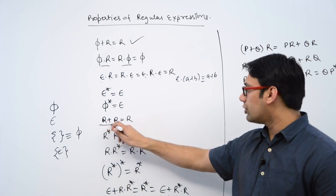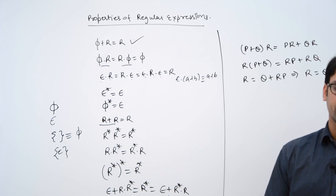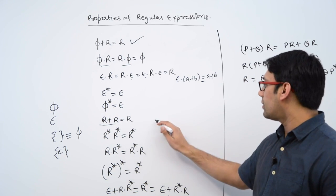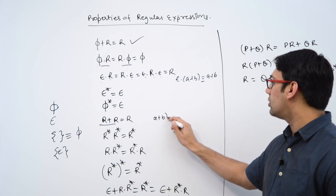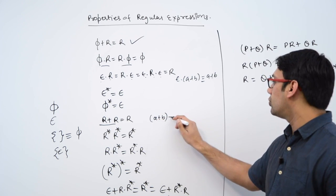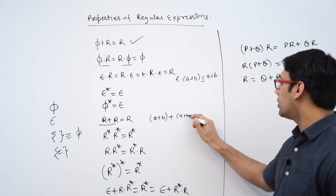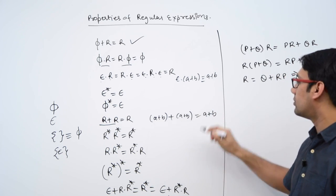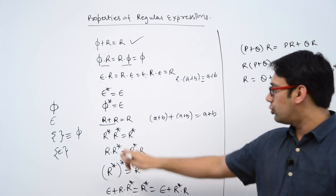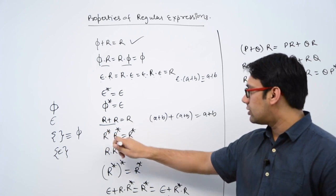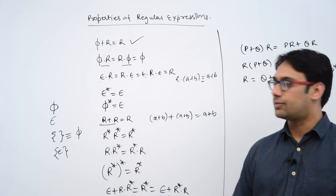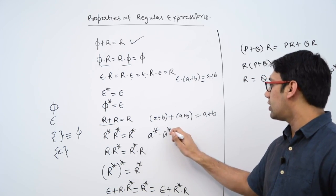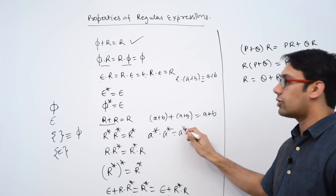If you do a union of the same regular expression, then you get the same regular expression. For example, if you do (a+b) union (a+b), then this is equal to (a+b) only. If you do r*·r*, then it is equal to r*. That means if you do a*·a*, then it is equal to a* only.